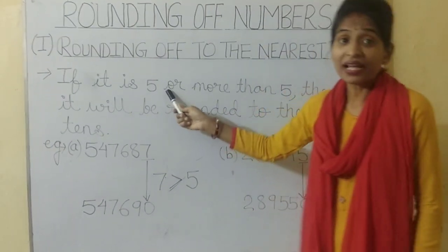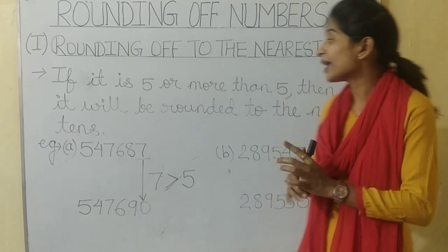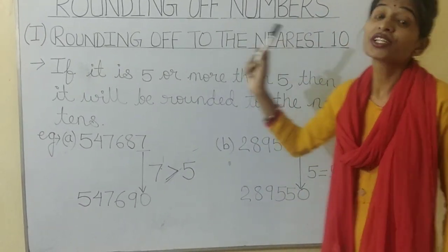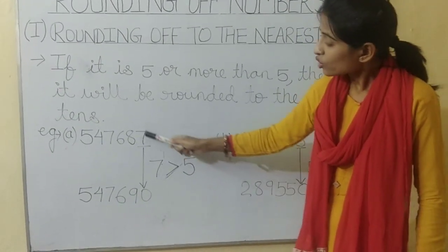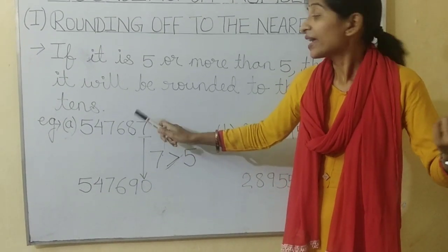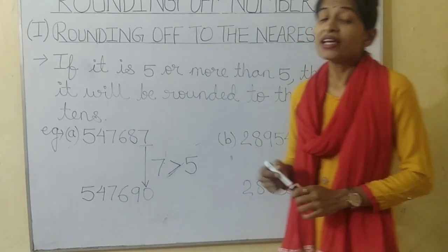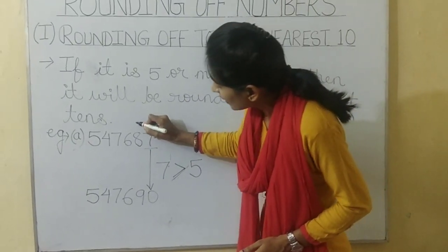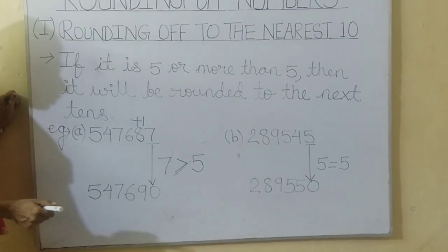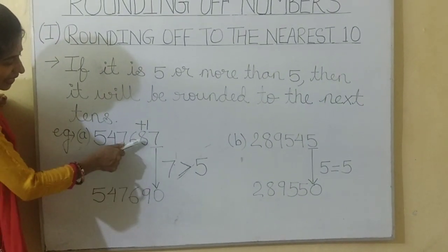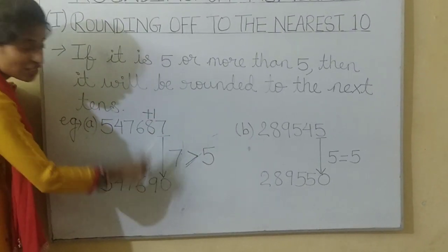But if it is 5 or more than 5 — that is, if it is 5, 6, 7, 8, or 9 — then it will be rounded to the next ten. Look at this example. Here 7 is more than 5, so it will be rounded to the next ten. It means it was 8 tens, now it will become 9 tens. Simply, this 8 will be increased by 1. So the answer will be 547690.